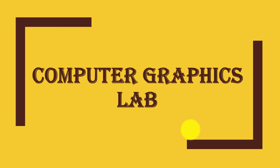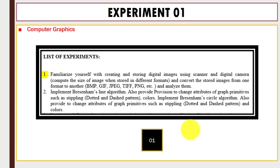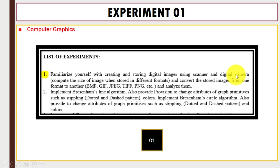In this video you will learn how we can perform the first computer graphics experiment: creating and storing digital images using a scanner and digital camera, then converting the stored images from one format to another format and analyzing the changes.